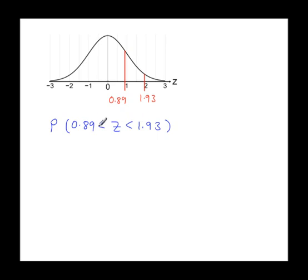Be careful how you read this. Z is greater than 0.89. It's not less than. You read it from the centre first. Z is greater than 0.89. That's the region we're looking at.